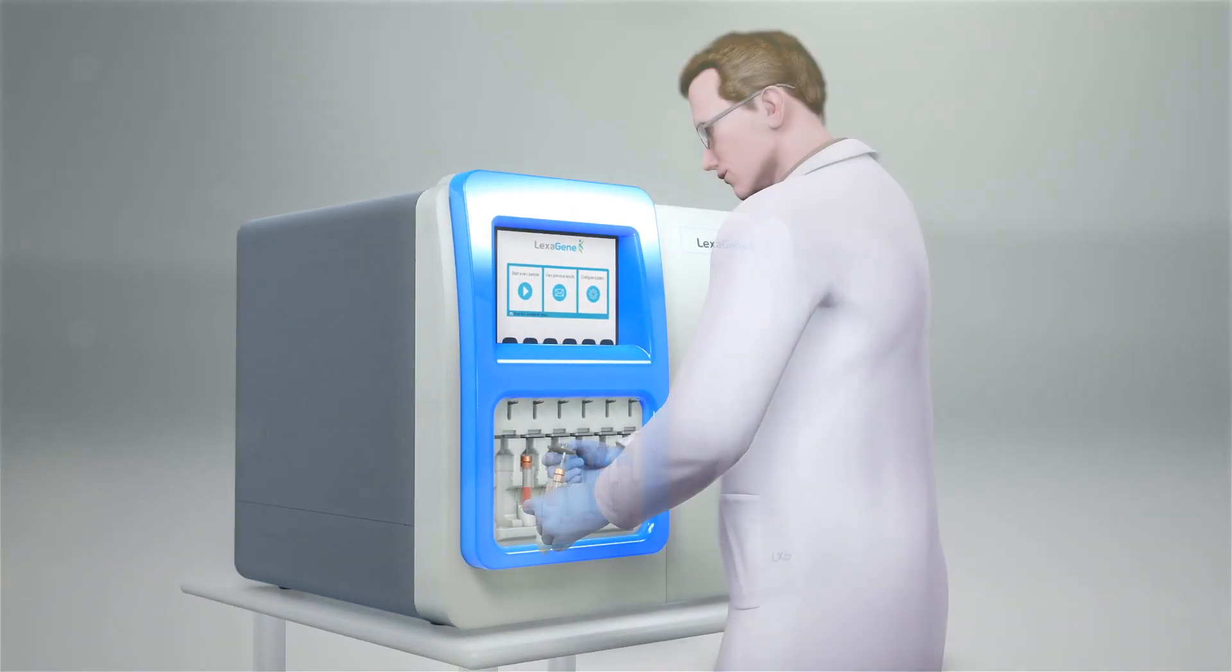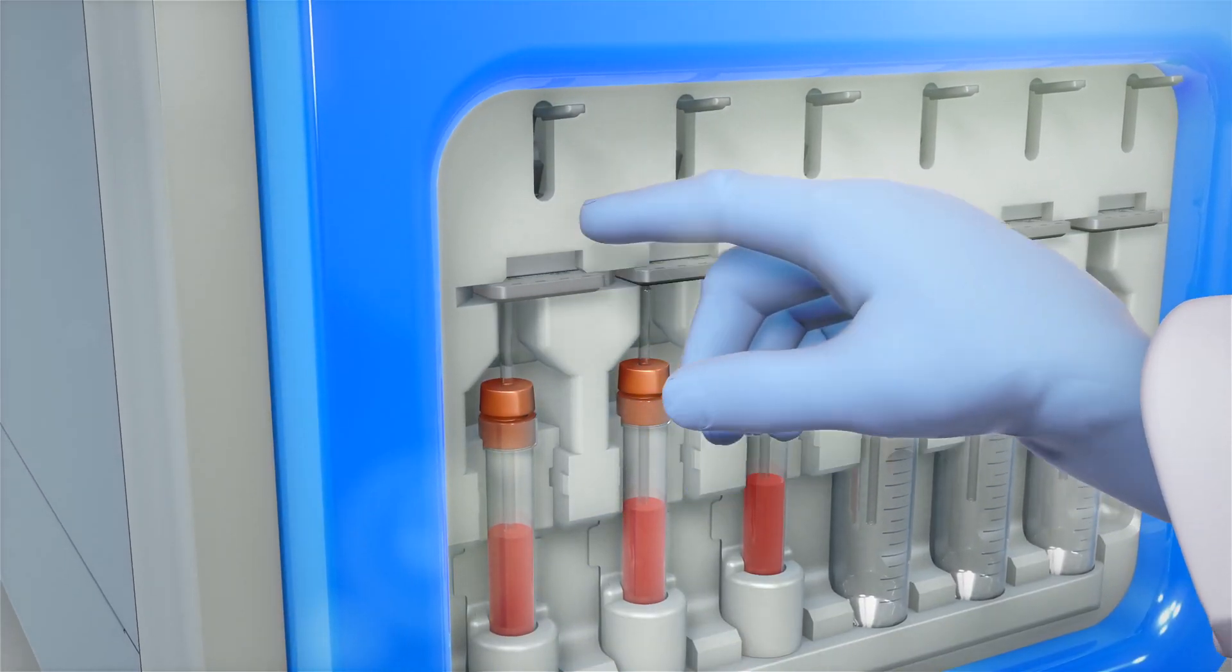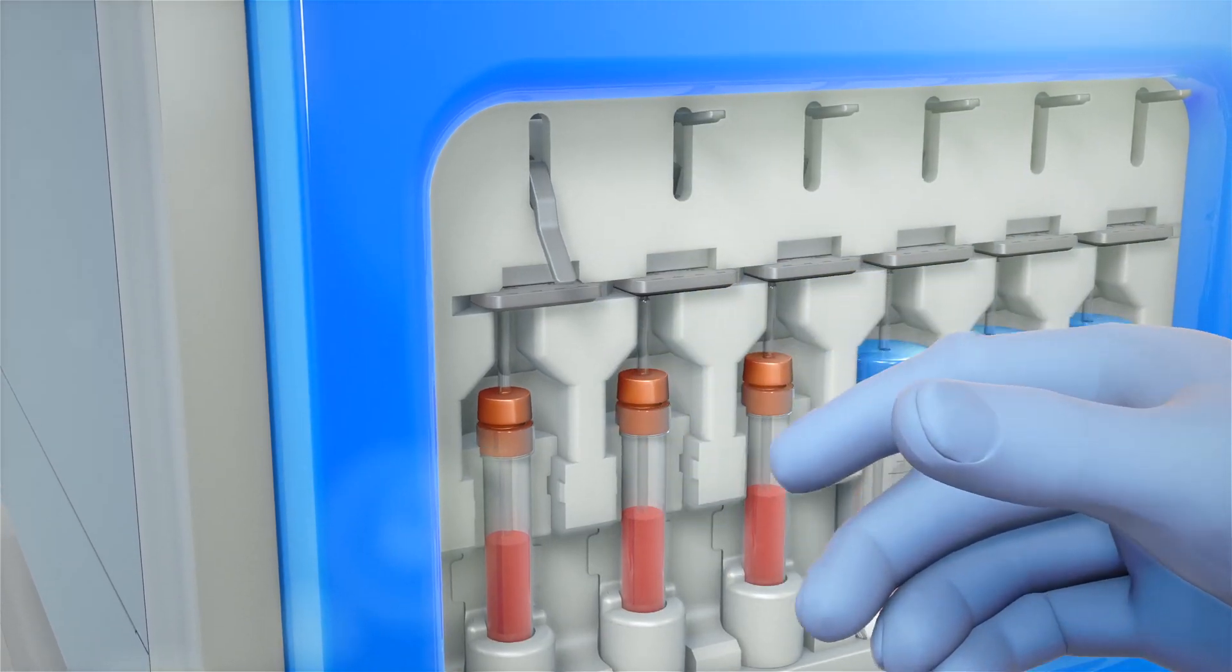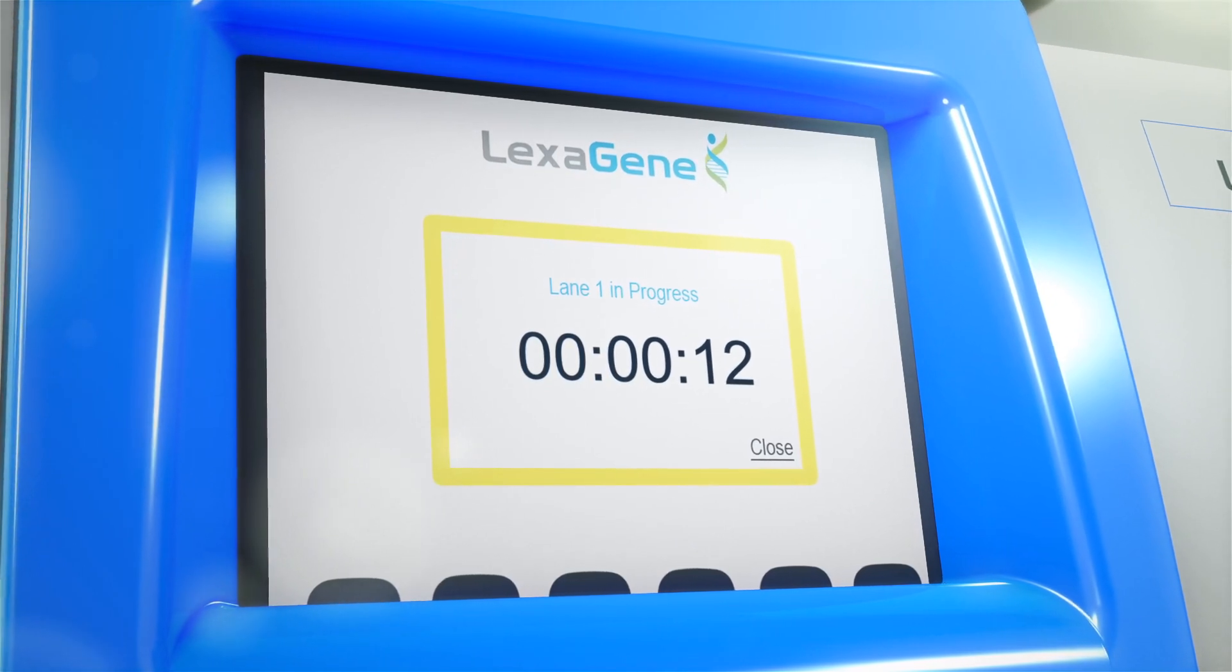LX6 is designed to be placed in facilities where personnel can load collected samples onto the instrument to be screened for up to 22 pathogens at once. Initiating sample processing takes less than one minute.